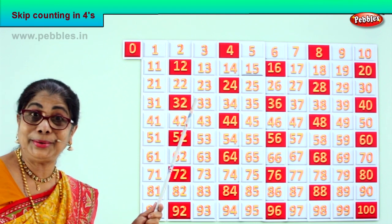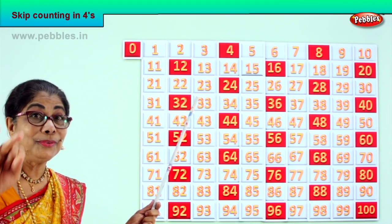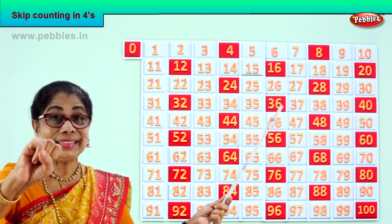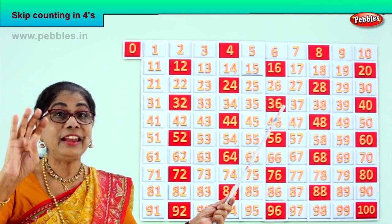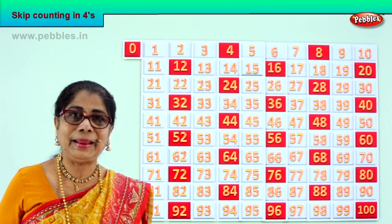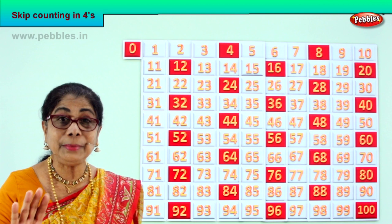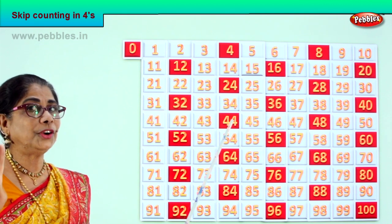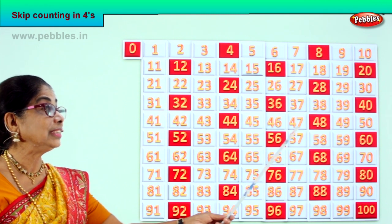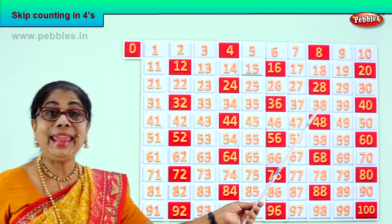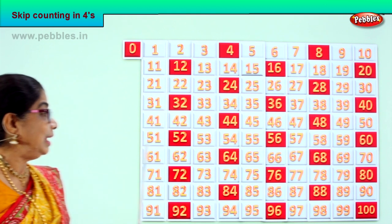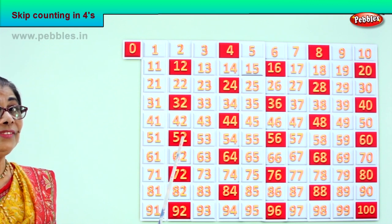After 32: 33, 34, 35, 36. After 36: 37, 38, 39, 40. After 40: 41, 42, 43, 44. After 44: 45, 46, 47, 48. After 48: 49, 50, 51, 52.